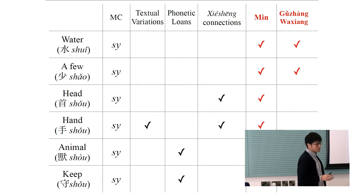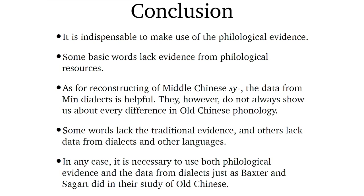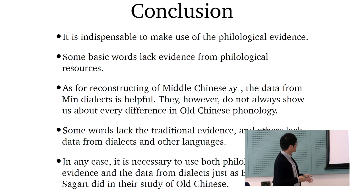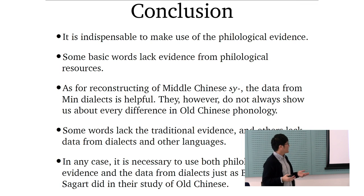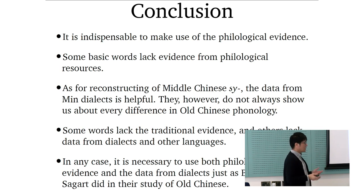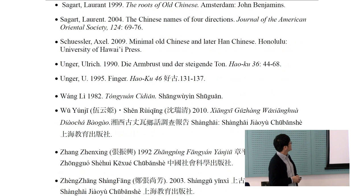In brief conclusion: it is indispensable to use philological evidence in Old Chinese studies, but some words lack this evidence. In that case we must use comparative data. As for reconstructing Middle Chinese *sy-, the data from Min dialects is really useful and helpful, but it does not always distinguish every difference in Old Chinese phonology. Some words lack philological evidence and others lack dialect data. We have to make use of both philological evidence and comparative evidence — just as Baxter and Sagart have been doing in the study of Old Chinese. Thank you very much.